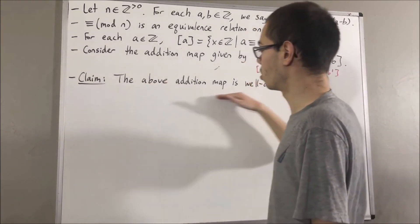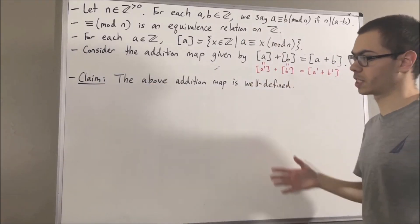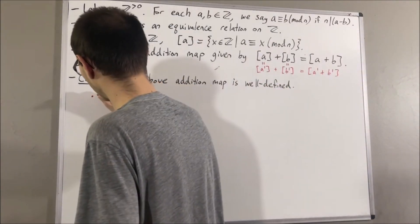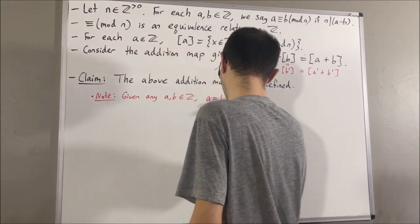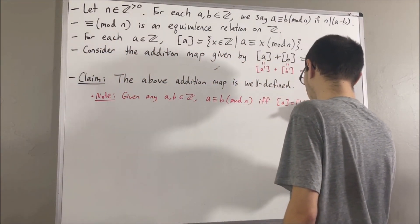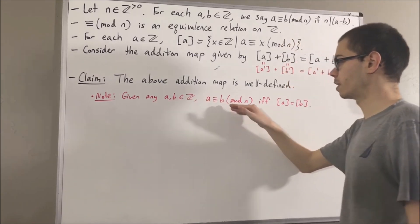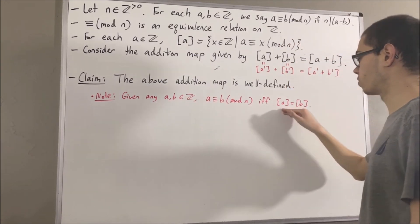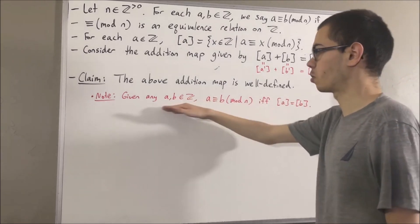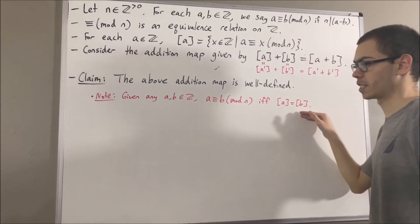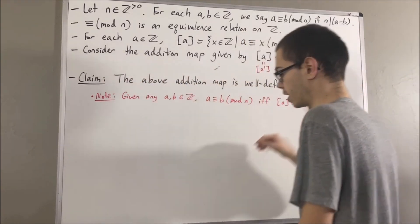In proving this claim, we are also going to be using a property about equivalence relations, which is as follows. Given any two integers a and b, a is congruent to b modulo n if and only if the equivalence class of a is equal to the equivalence class of b. In fact, this result holds for equivalence classes in general. So now, let's get into proving this claim.